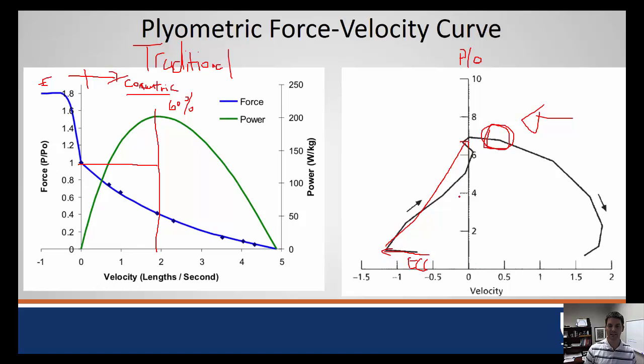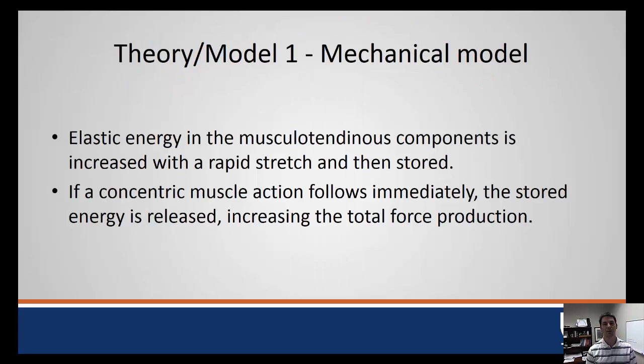This is a beautiful example: eccentric contraction followed by a concentric contraction, and we generate a maximum amount of force much more rapidly. How do we do it? There's two theories. The first is a mechanical model. If you've ever been an engineer or took engineering classes, you'll like this model. This idea is that we're going to use the elastic energy in our musculotendon components.